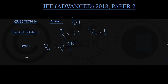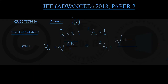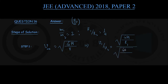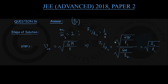Therefore, the ratio of orbital speeds for the two satellites V1 upon V2 equals square root of G·M/R1 divided by square root of G·M/R2. The G·M cancels out, giving us square root of R2 upon R1. Since R1 by R2 is 1 upon 4, the square root of R2 by R1 is simply 2. So the orbital speed ratio V1 by V2 comes out to 2.